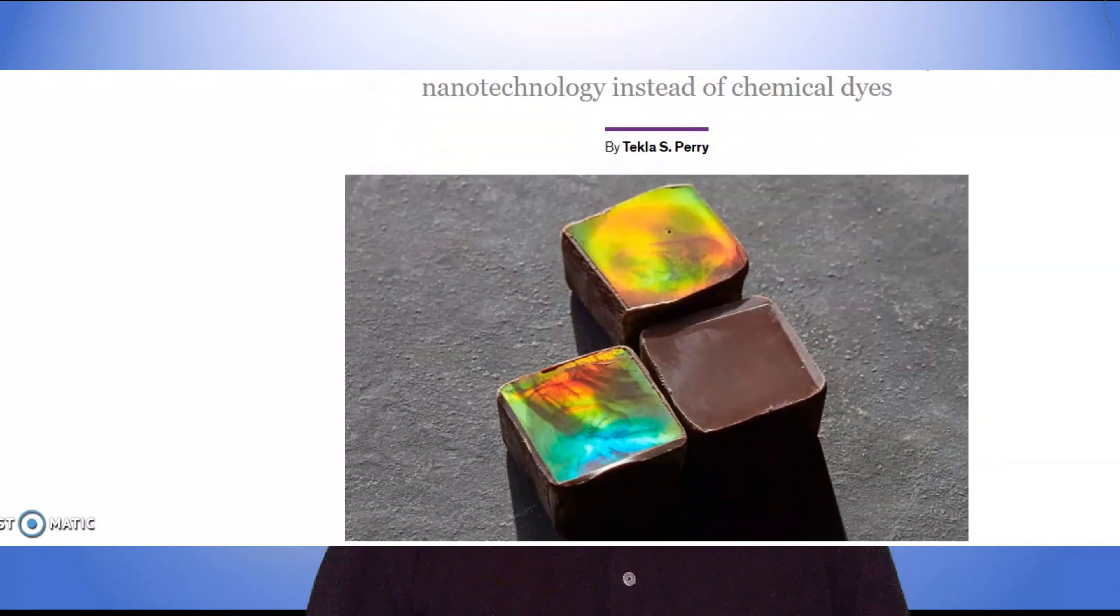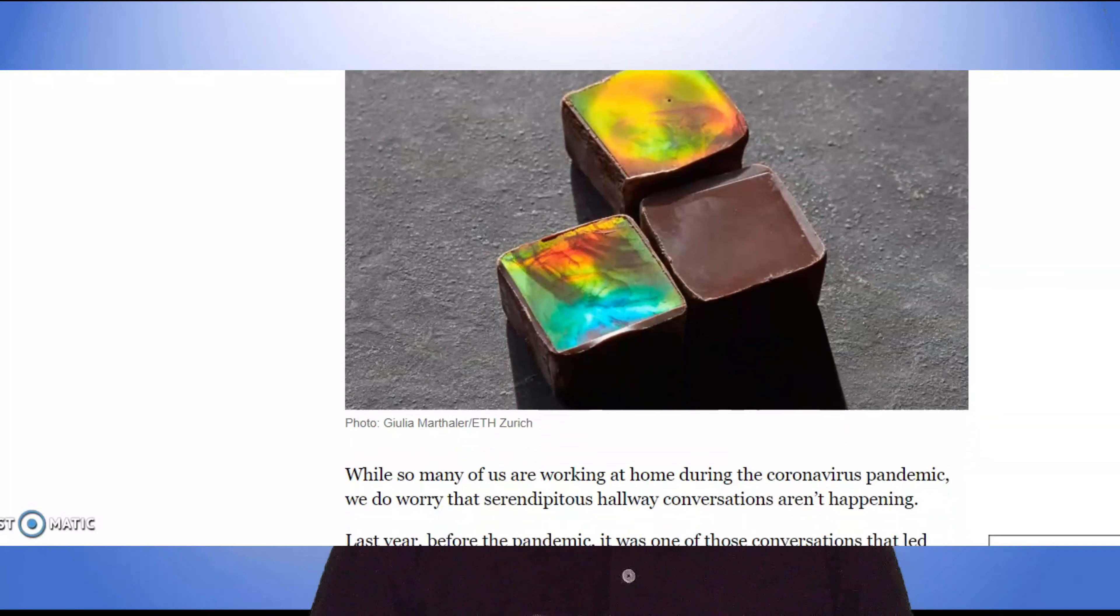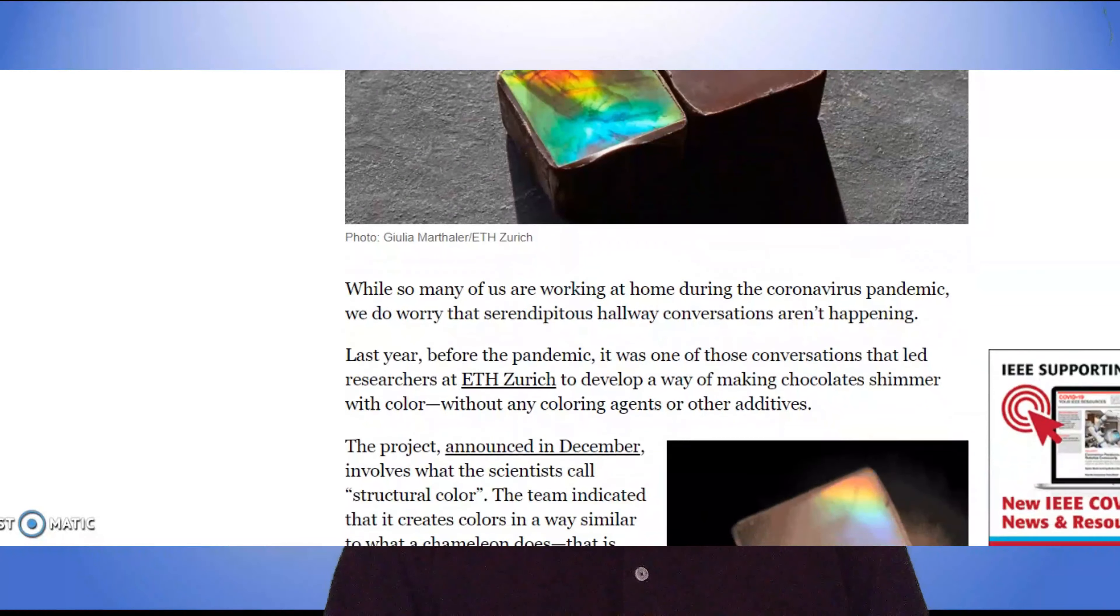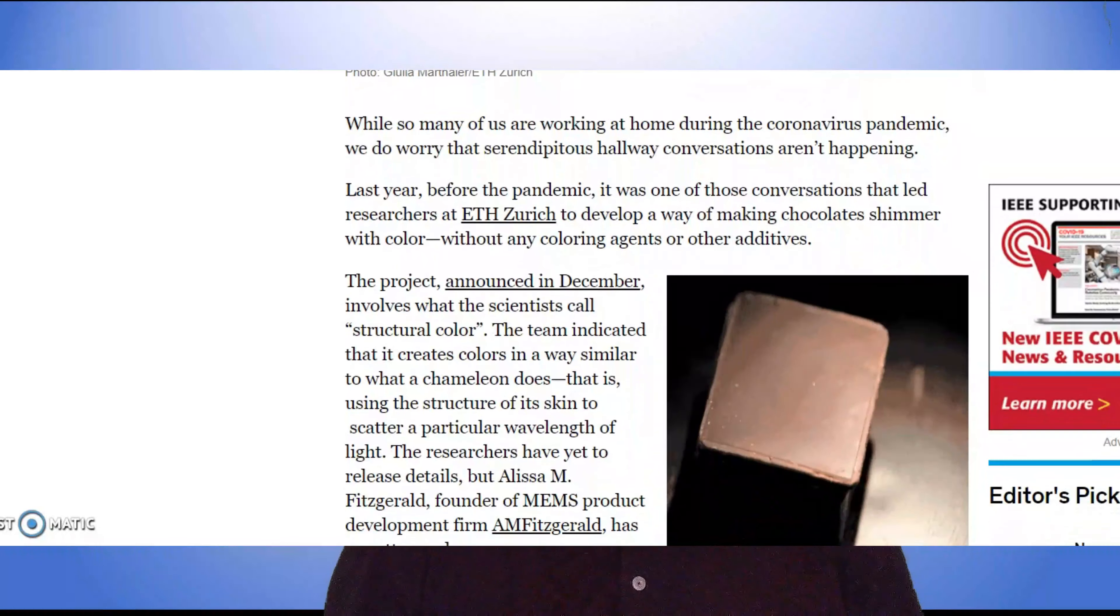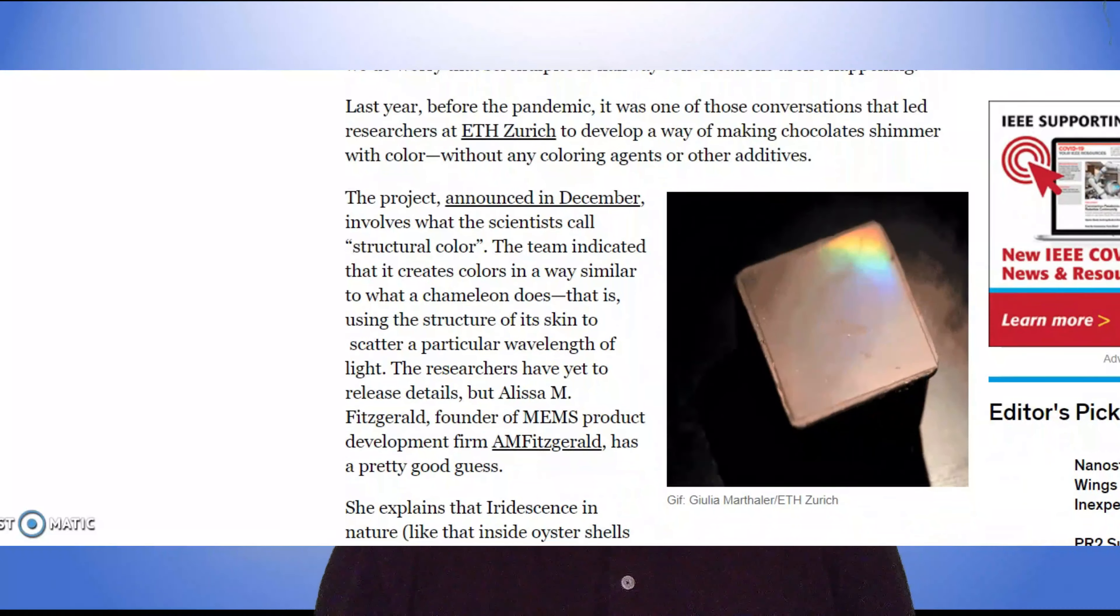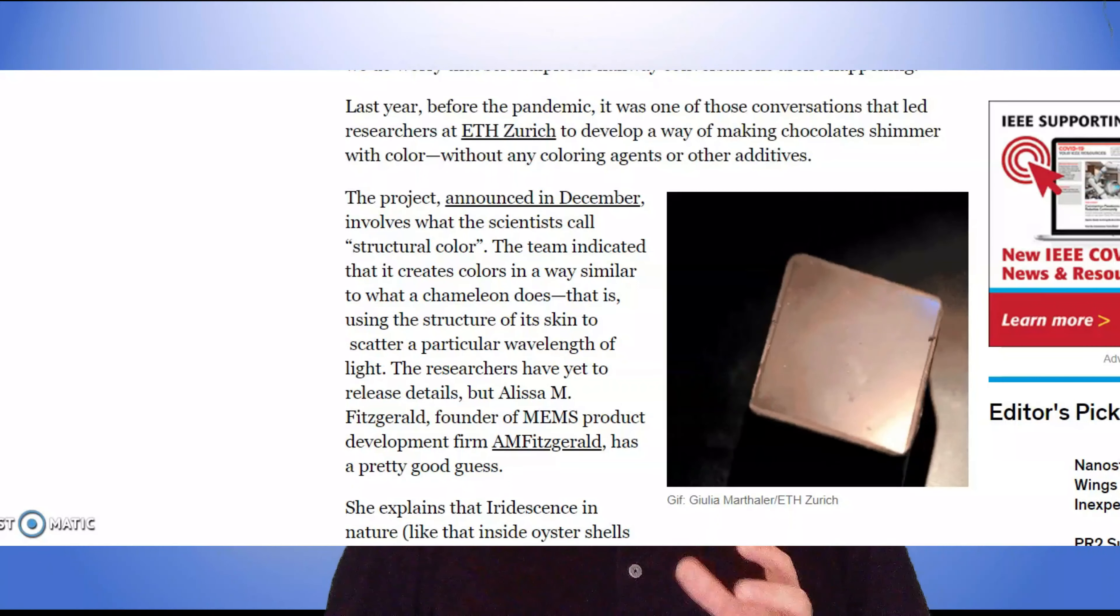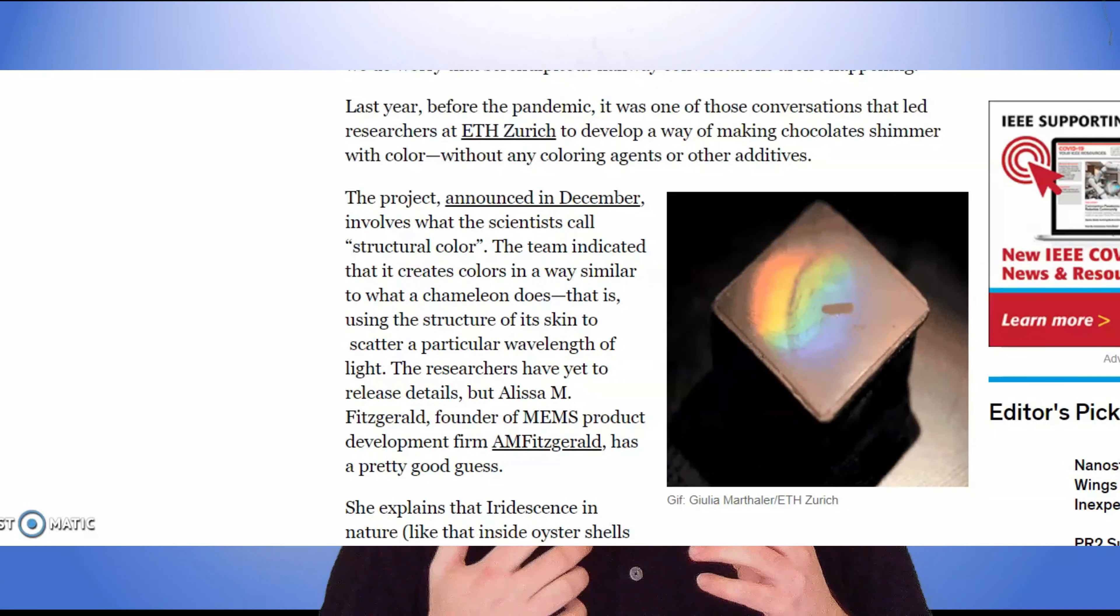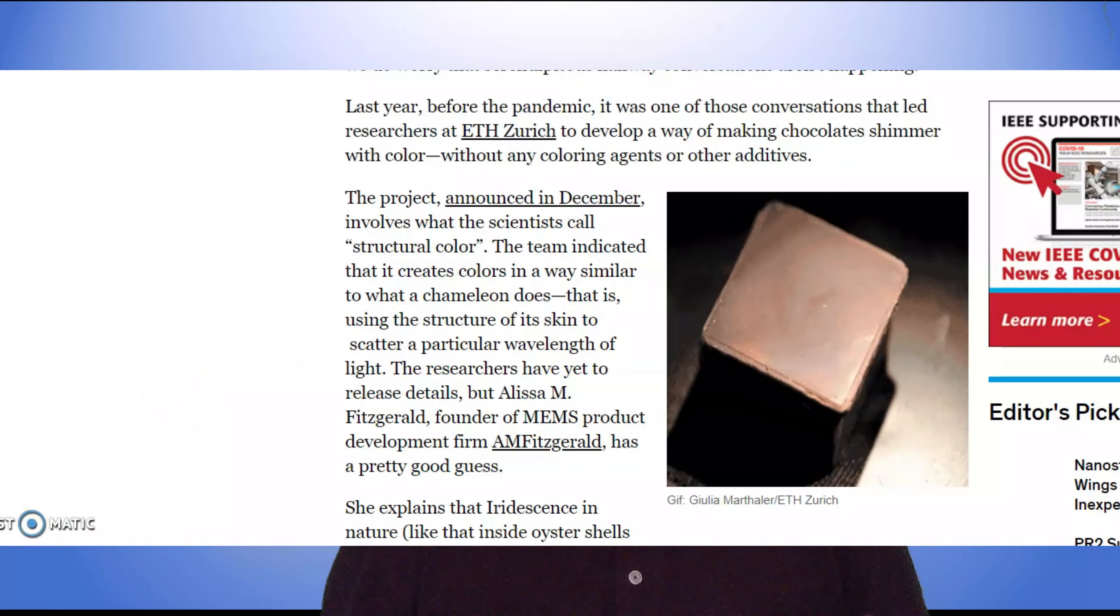Chocolate, once it's been tempered, is poured into a mold to solidify, and that's what gives chocolate its shape. They used etching techniques to make the mold have nano-features in it, so the surface of the chocolate ended up with nanostructures on the surface.